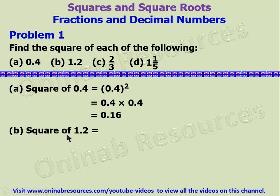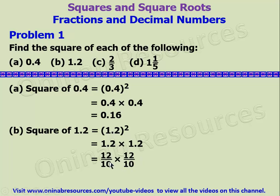We go to part B of the problem. The square of 1.2 means 1.2 to the power of 2, which means 1.2 times 1.2. Here we are going to use a different method — we can write this as a fraction: 12 over 10 times 12 over 10. We multiply the numerators: 12 times 12 gives 144, and 10 times 10 gives 100. So 144 over 100 means we have 144 in 2 decimal places: 1, 2. So our answer is 1.44. That is the square of 1.2.